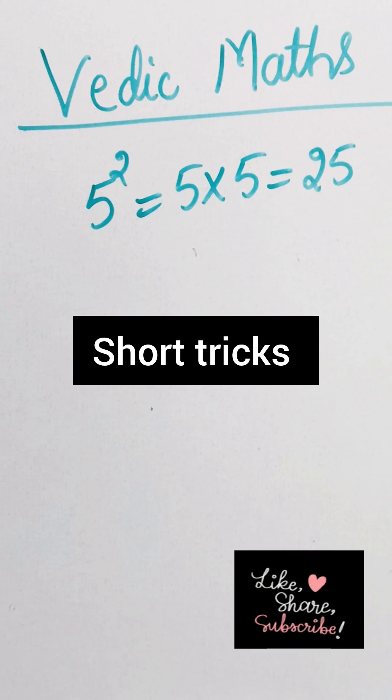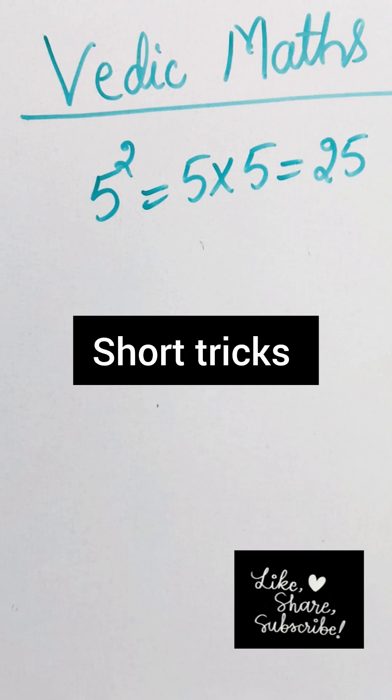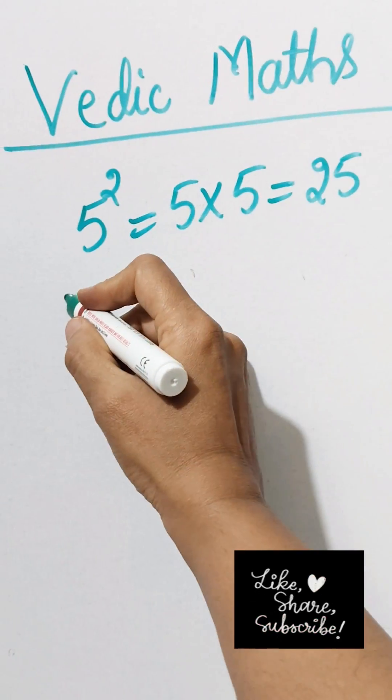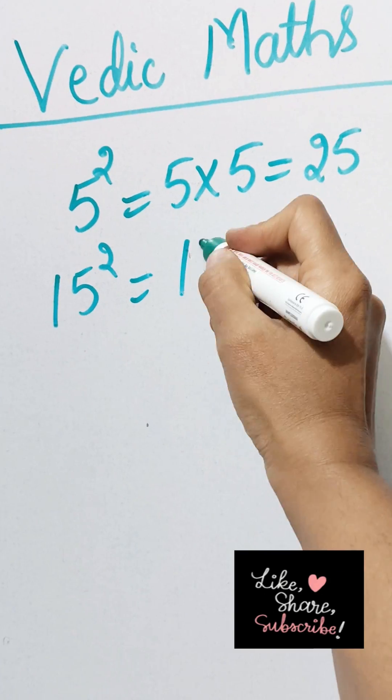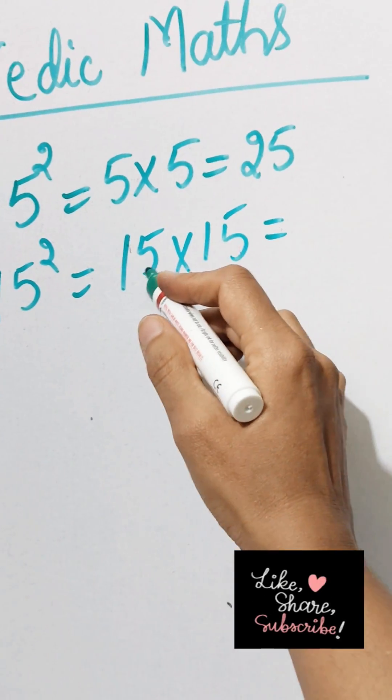Hello everyone, here is a short trick to find the square of numbers ending with 5. We know that 5 squared is 5 into 5 equals 25. So how to calculate 15 square, 15 into 15? You just multiply...